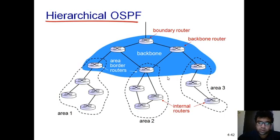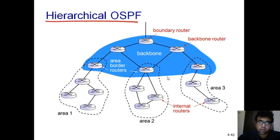That is how OSPF works, which is completely based on link state routing algorithm or Dijkstra's. Any questions can be asked in the comments or by calling. In the coming lecture, we are going to discuss Border Gateway Protocol - BGP - which is an inter-domain routing protocol used for connecting autonomous systems together, and we will discuss that in detail. Thank you very much, have a good day.